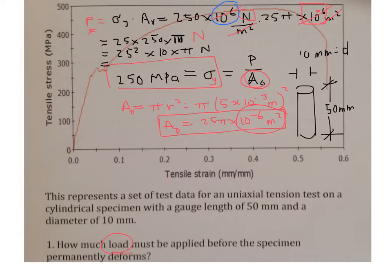What is 25 squared, like 625, right? 625 times 10 is 6,250 times pi newtons.